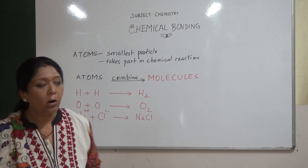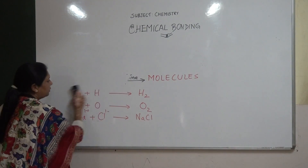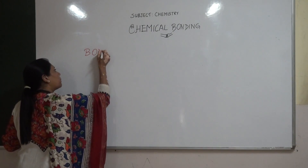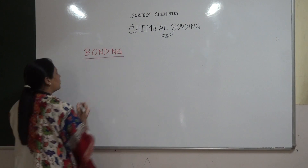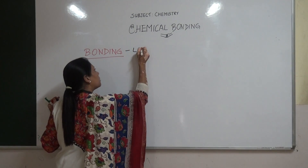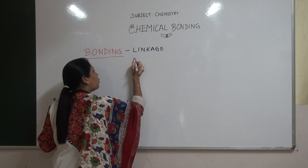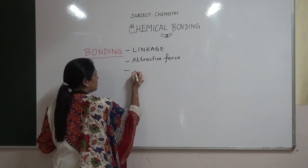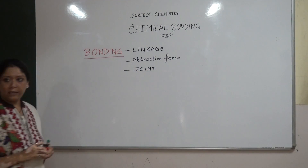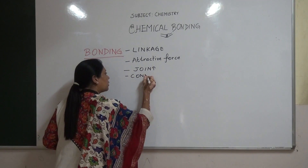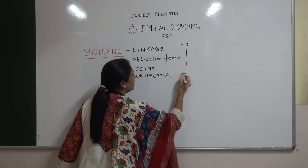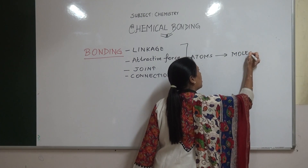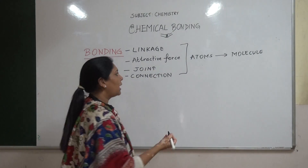Chemical bonding means a bonding. A bonding is nothing but a linkage — a force, an attractive force, a joint, or a connection. Between what? Between atoms. What is the reason? So that they form the molecule. Why? So that they attain stability.